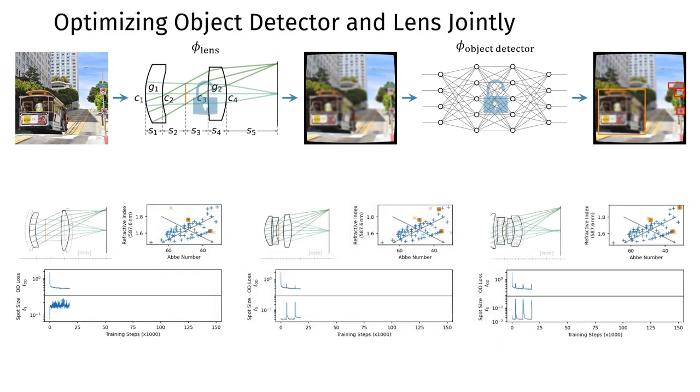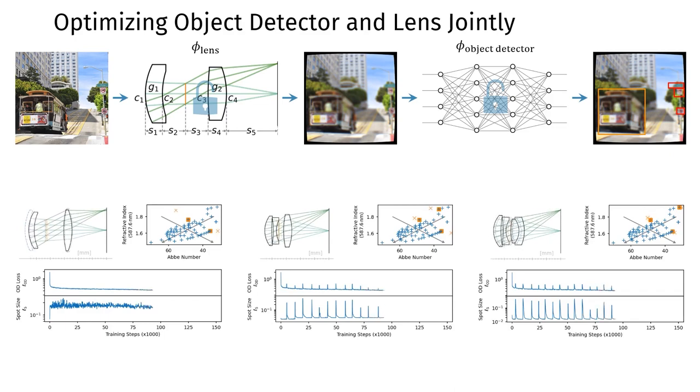As a further step, we start once again with the object detector that was pre-trained with ideal optics, and this time we optimize not only the object detector, but the lens as well. Using our joint lens optimization strategy, the lenses remain in a manufacturable state during most or all of the optimization process, despite all lens variables allowed to move freely.